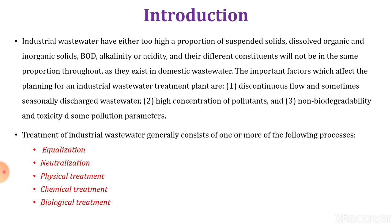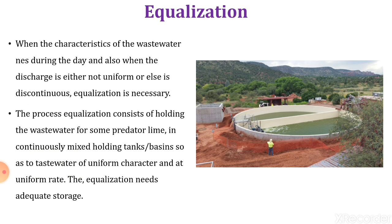Treatment of industrial wastewater generally consists of one or more of the following processes: equalization, neutralization, physical treatment, chemical treatment, and biological treatment. Let us see each treatment in detail. Equalization is necessary when the characteristics of wastewater change during the day or when the discharge is either not uniform or continuous. Equalization consists of holding wastewater for some predetermined time in a continuously mixed holding tank or basin so as to produce wastewater of uniform character and at a uniform rate.